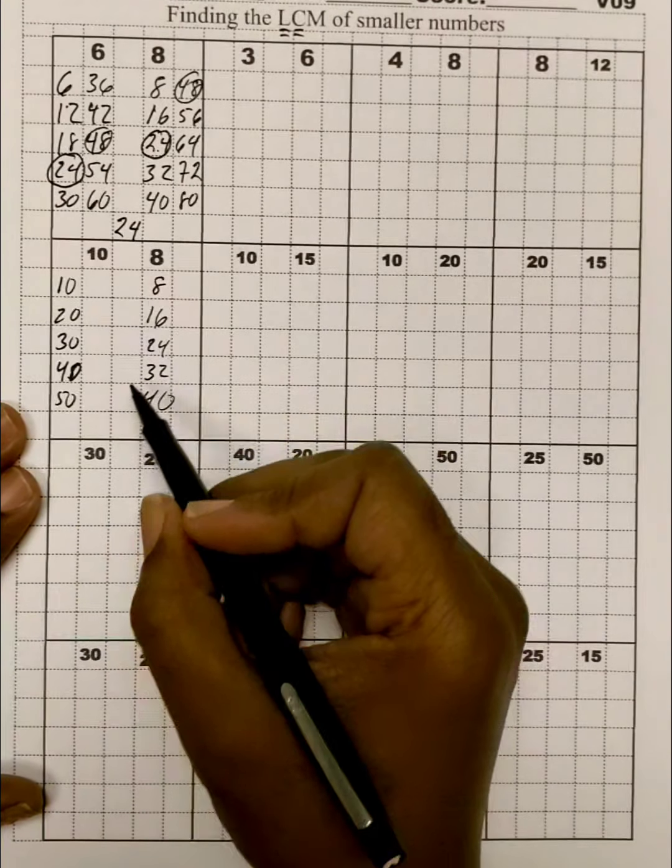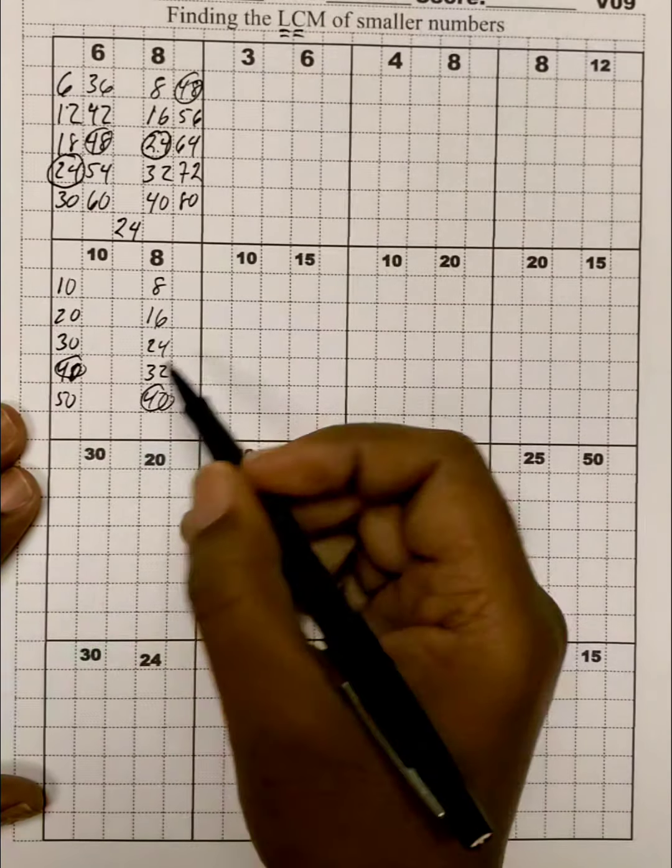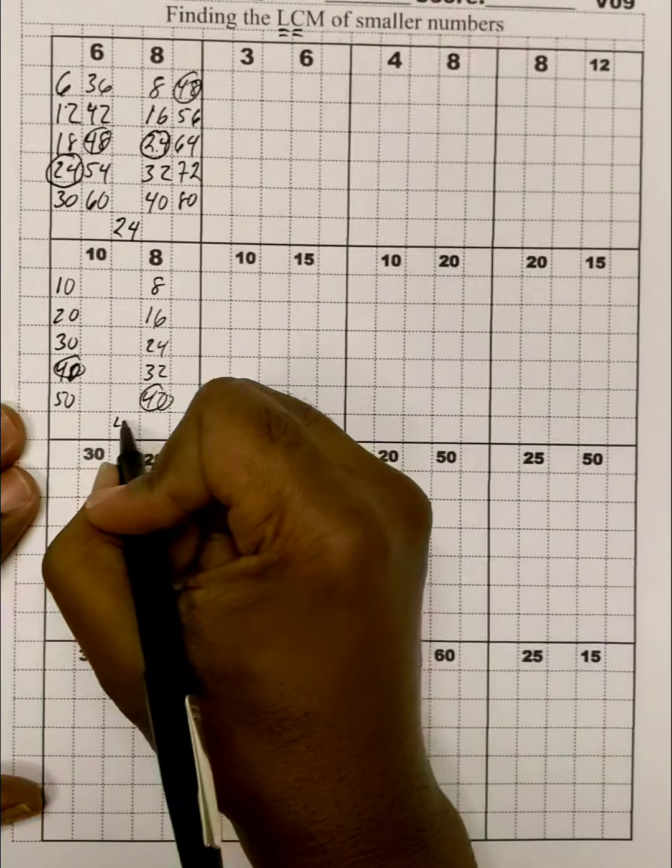And let's see if we have anything in common. Aha, there we go. They have the 40, and there's nothing less than that. So, the common, least common multiple is 40.